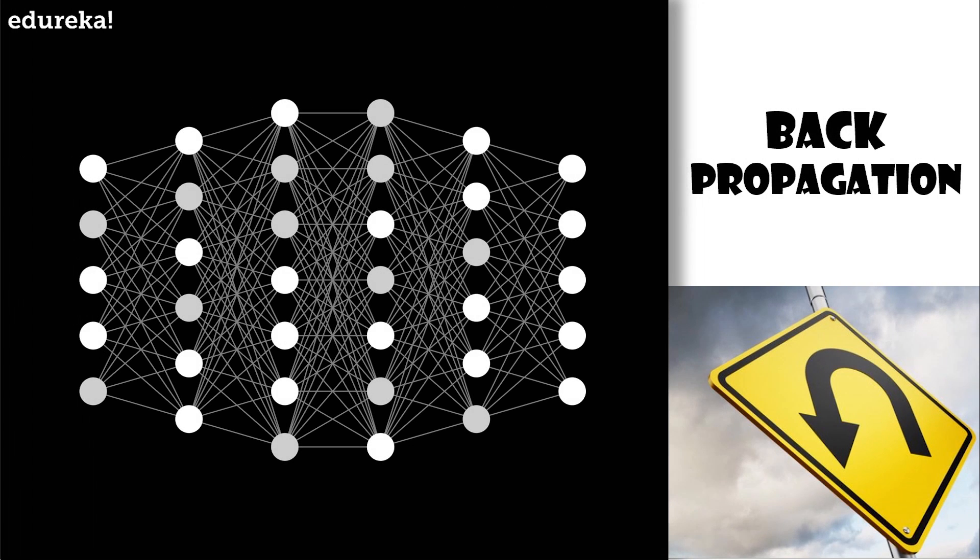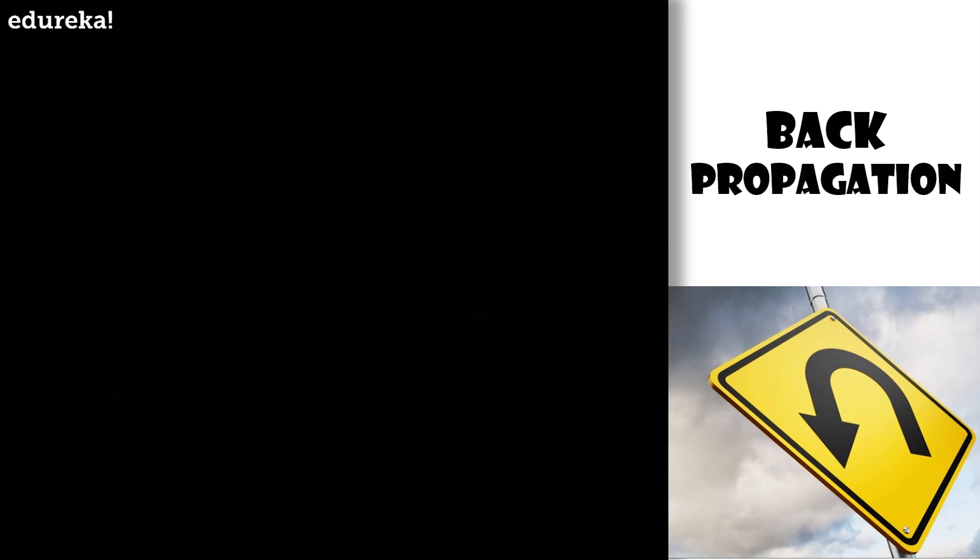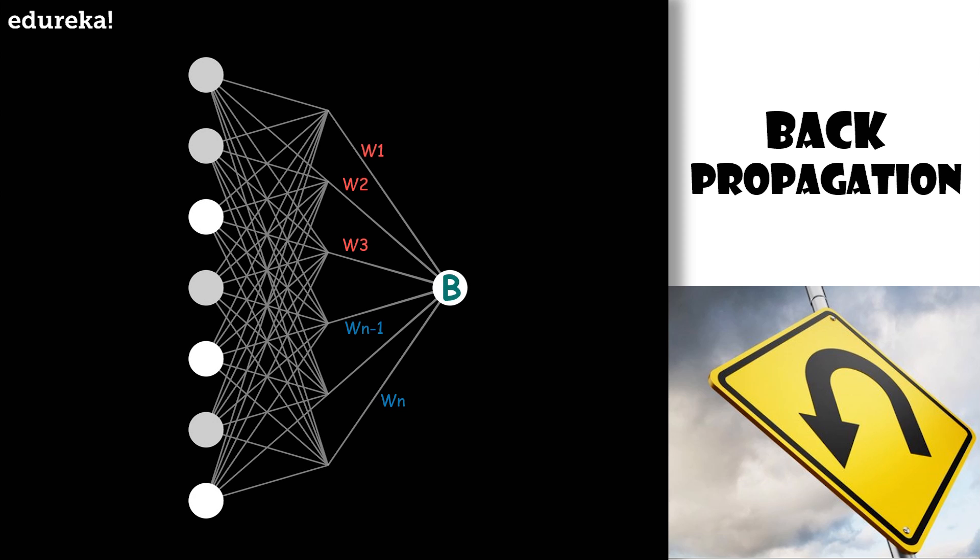What is back propagation? It is the actual algorithm which makes all the learning possible in a neural network. Basically, it's an algorithm for computing the complicated gradient. The magnitude of each component here is telling us how sensitive the cost function is to the weights and bias.